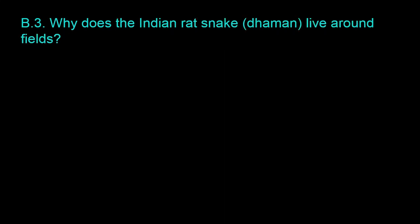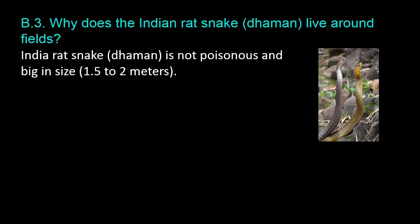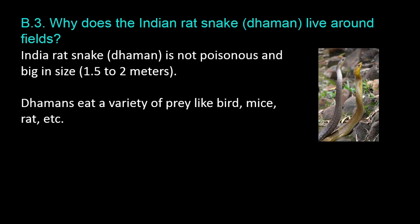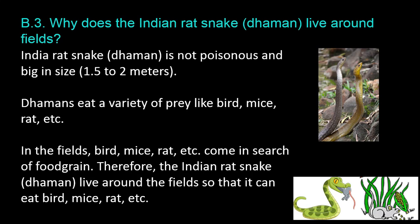Question B.3: Why does the Indian rat snake, damon, live around fields? The Indian rat snake, damon, is not poisonous and is big in size — 1.5 to 2 meters. Damons eat a variety of prey like birds, mice, and rats. In the fields, birds, mice, and rats come in search of food grain. Therefore, the Indian rat snake, damon, lives around the fields so that it can eat birds, mice, and rats.